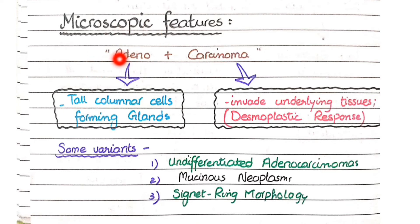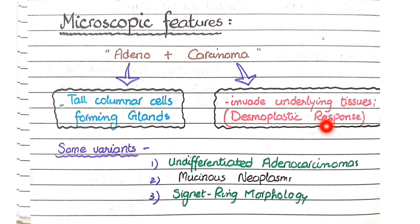Now let's look at the microscopic features of colonic adenocarcinomas. The key word is adeno plus carcinoma: adeno means glands, so you will see tall columnar epithelial cells forming glands. Carcinoma implies invasion, so these glands invade the underlying tissues into the submucosa and muscularis propria. The underlying layers respond by developing fibrotic connective tissue — this is called the desmoplastic response.